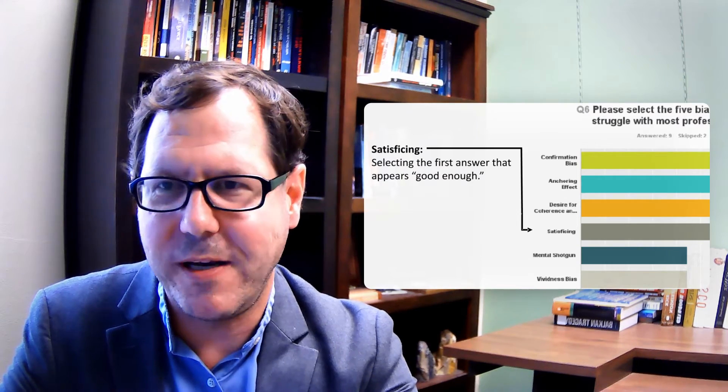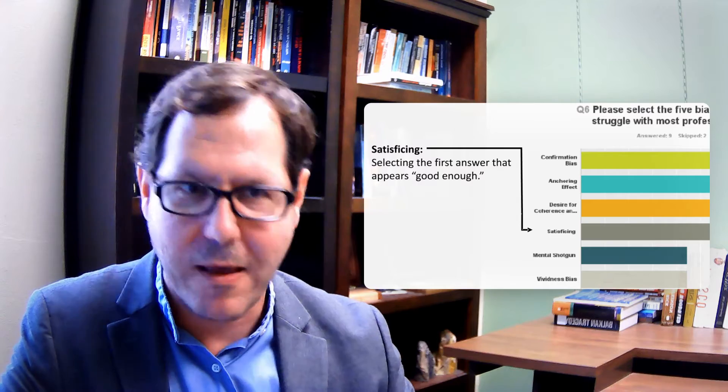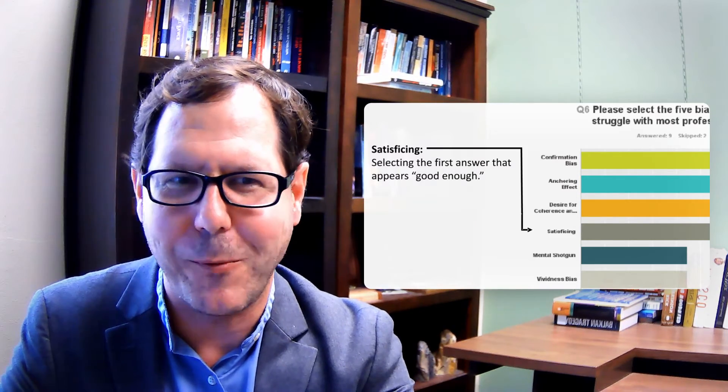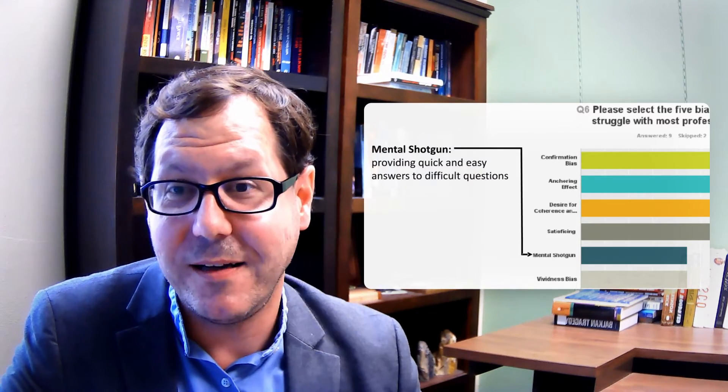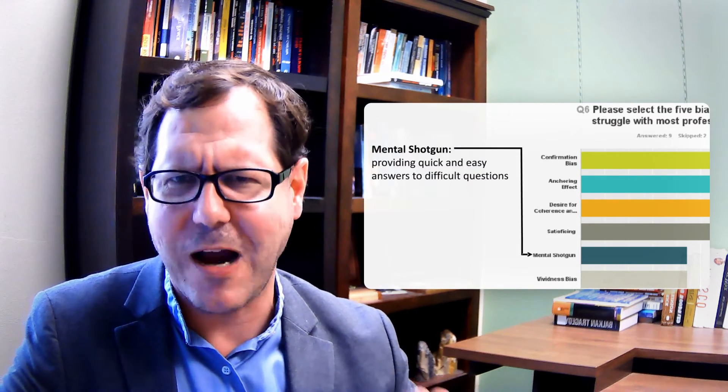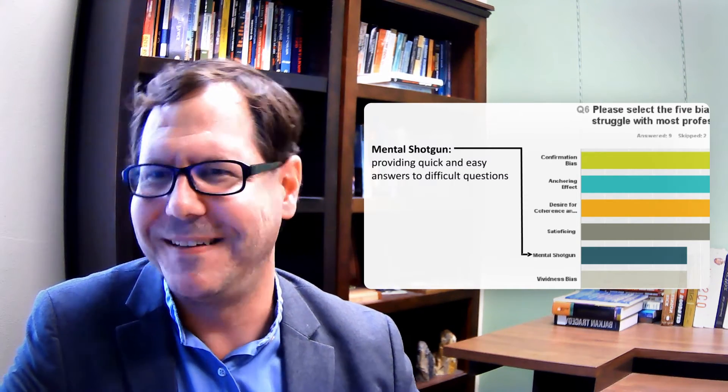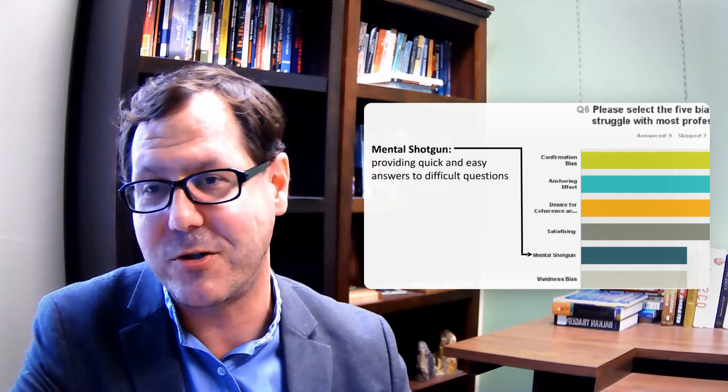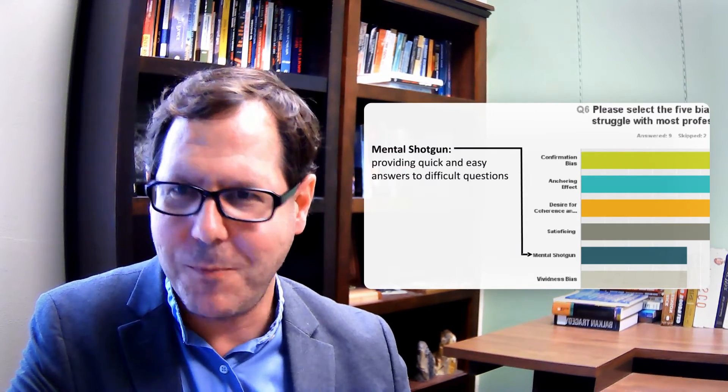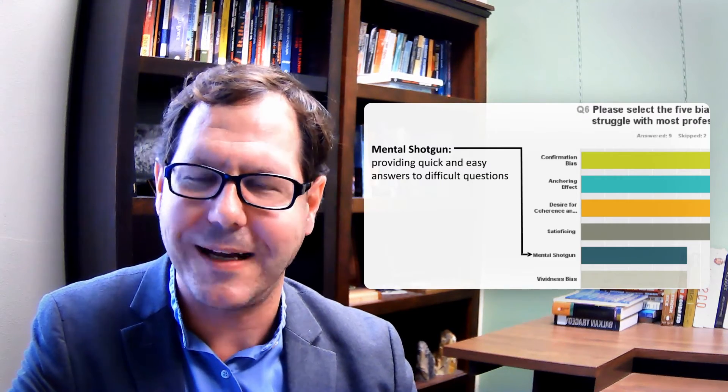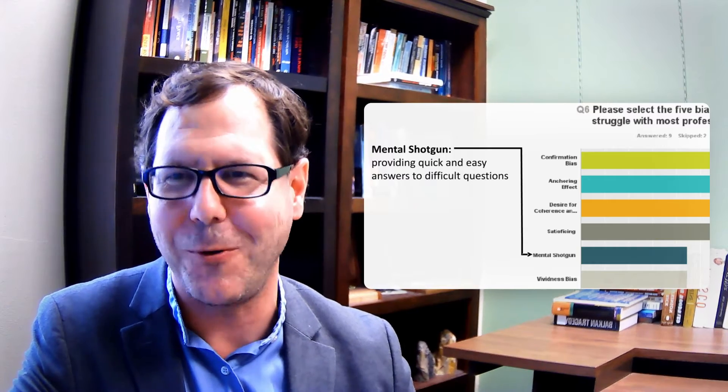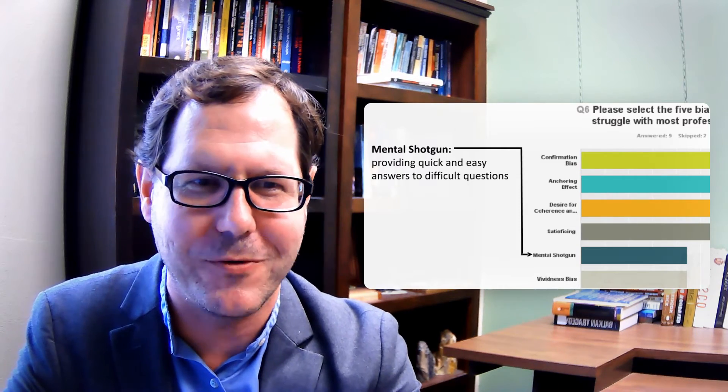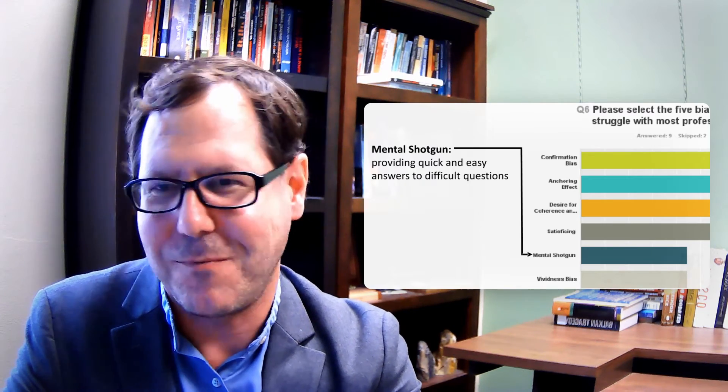We engage in satisficing - selecting the first answer that appears good enough rather than considering the full range. It's a shortcut for working through complexity by ignoring it. There's the mental shotgun approach, grabbing quick and easy answers to complex questions. In the lead up after the US invasion of Iraq, people kept saying the United States invaded Iraq for oil. I kept trying to say there was so much more than oil. You're taking complexity and ignoring it because you've got a simple straightforward answer.